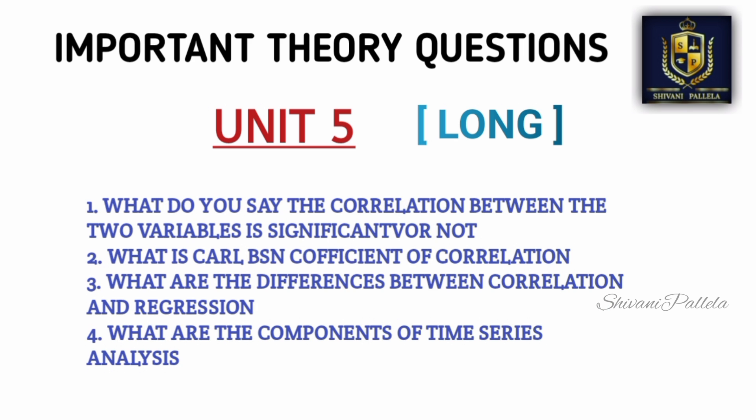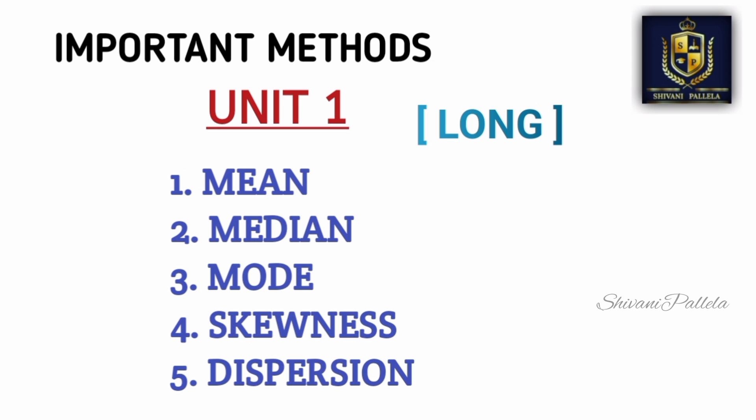Try to be perfect with problematic for Unit 4. Unit 5 has zero percent chance of a repeated theory question — they will compulsorily ask only problematic questions from Unit 5 for both questions. If you still want to learn theory from Unit 5, you can learn those four theory questions. Now we will discuss the important problematic methods.